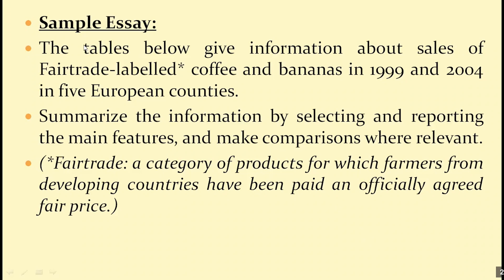Here's a sample essay, and throughout the sample essay we're going to learn how to write about tables. The question says the tables below give information about sales of fair trade labeled coffee and bananas in 1999 and 2004 in five European countries. Summarize the information by selecting and reporting the main features and make comparisons where relevant. Fair trade labeled coffee and banana is a category of products for which farmers from developing countries have been paid an officially agreed fair price.